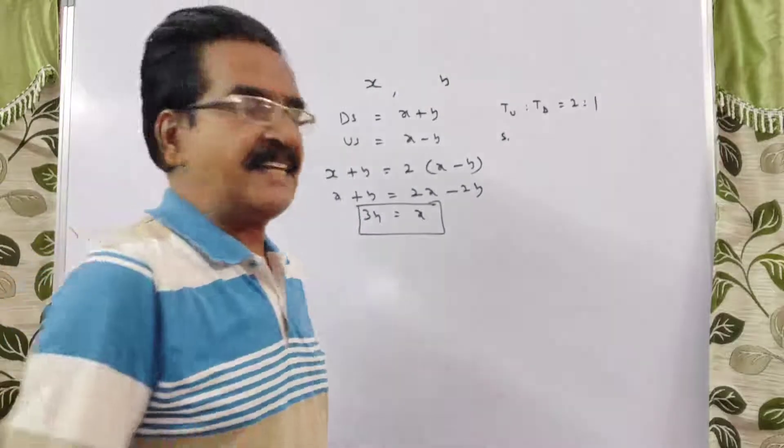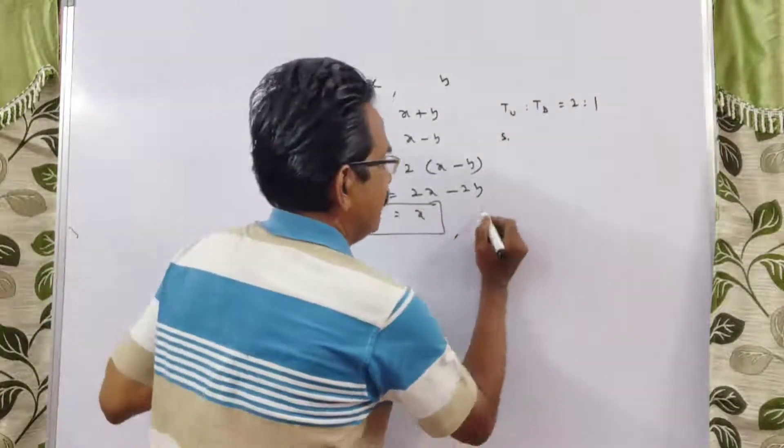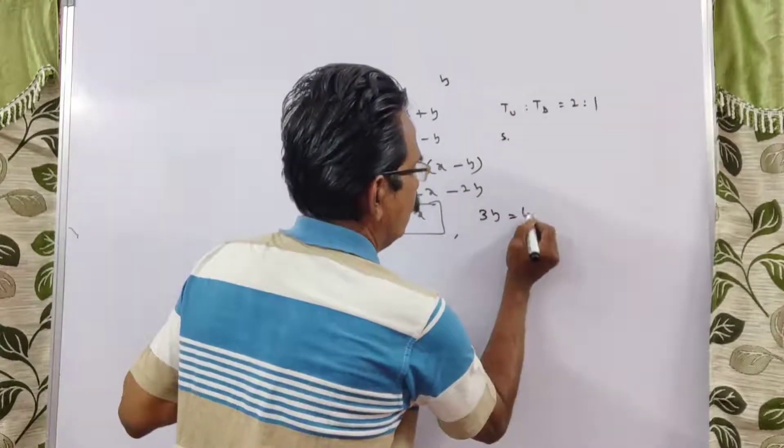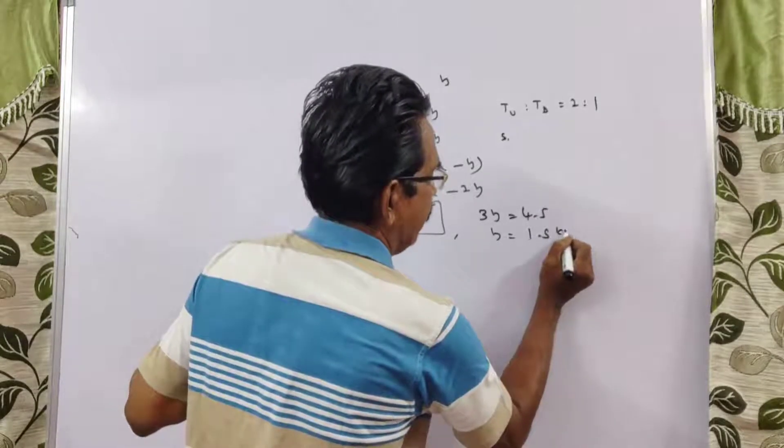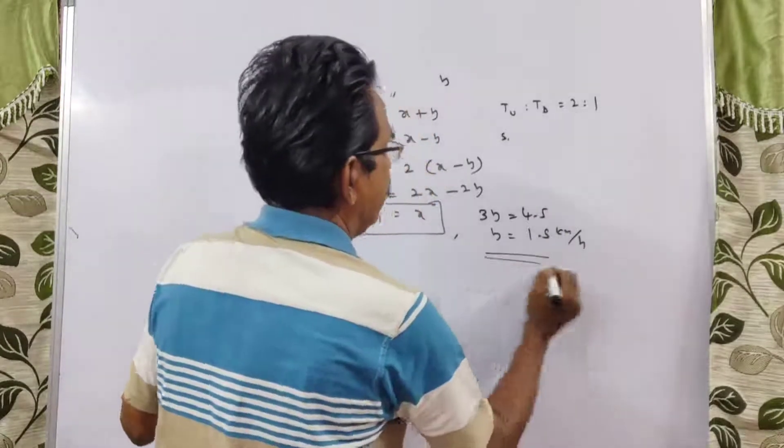Now, what is given? We know x equals 4.5 kmph, so 3y equals 4.5, which means y equals 1.5 kmph.